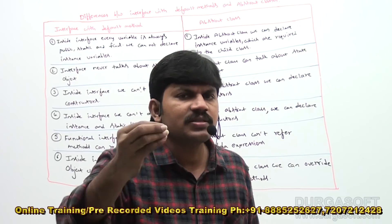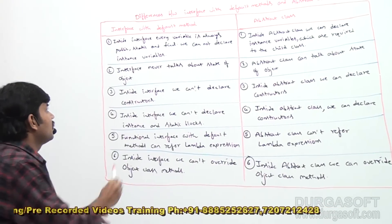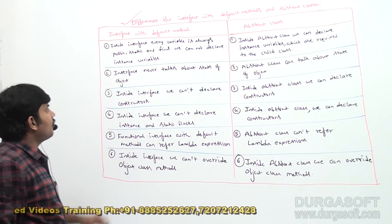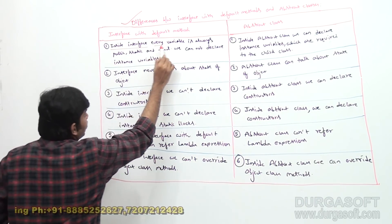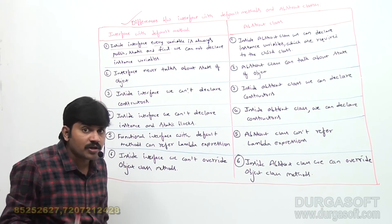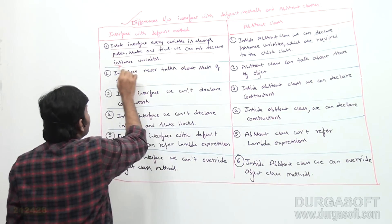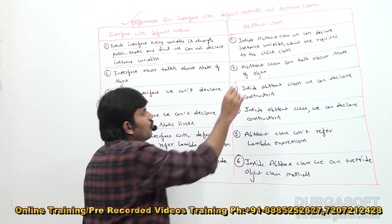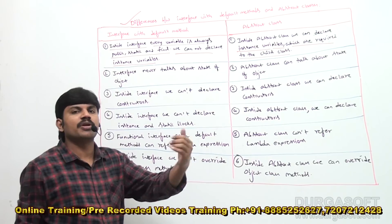There are many differences between interface with default methods and abstract classes. Let me summarize them in tabular form. First column: interface with default methods. Second column: abstract class. First point: inside an interface, every variable is always `public static final` — we can't declare instance variables. But inside an abstract class, we can declare instance variables which are required by the child class.